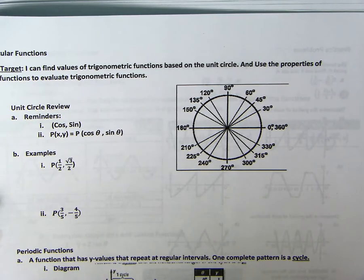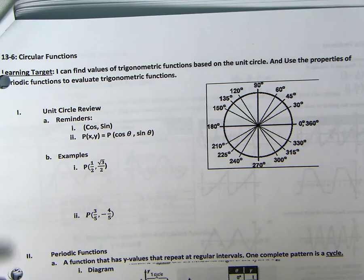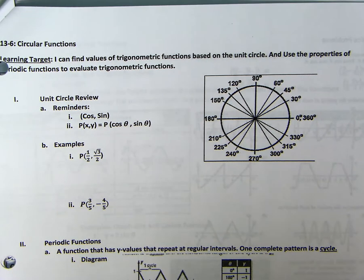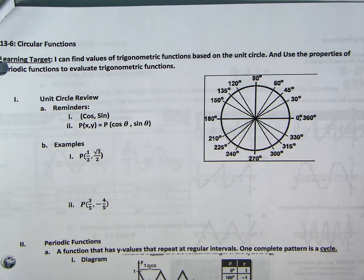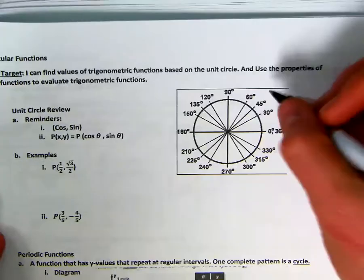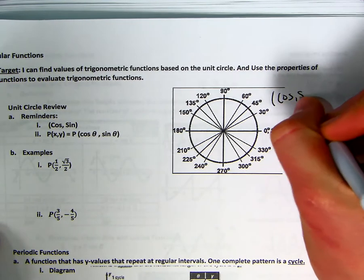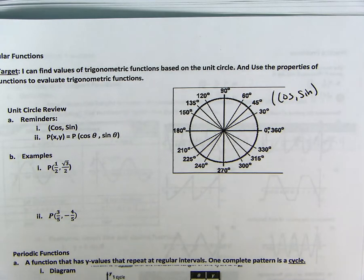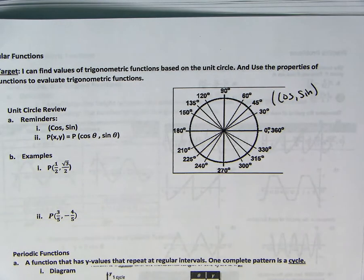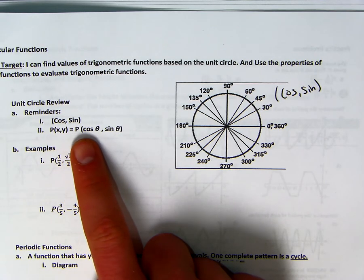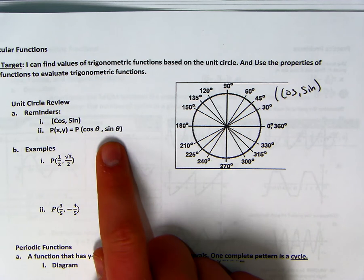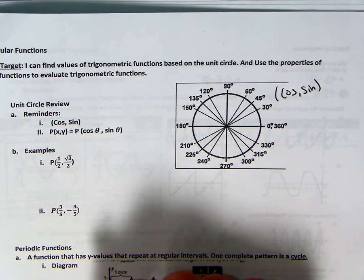So, we have circular functions there. I can find the value of trig functions based on the unit circle and use the properties of periodic functions to evaluate trig functions. First thing, reminder, with the unit circle, it's cosine, comma, sine. That's the ordered pairs. And then, basically, if you have something that's like P of X, comma, Y, what is this? Well, P of cosine theta, comma, sine theta.